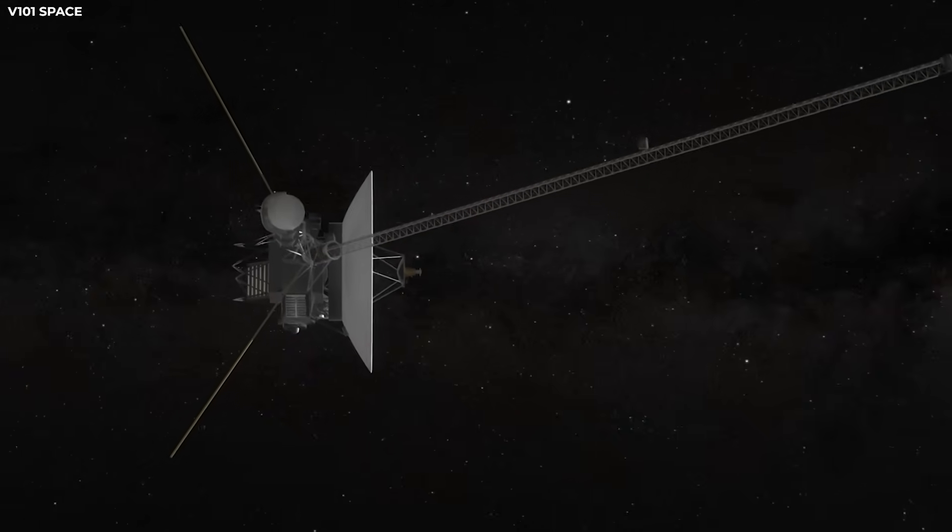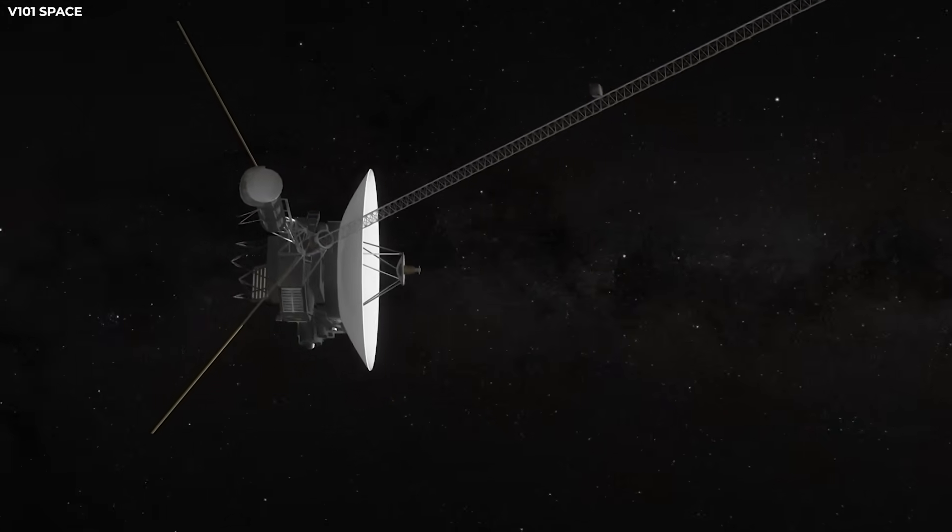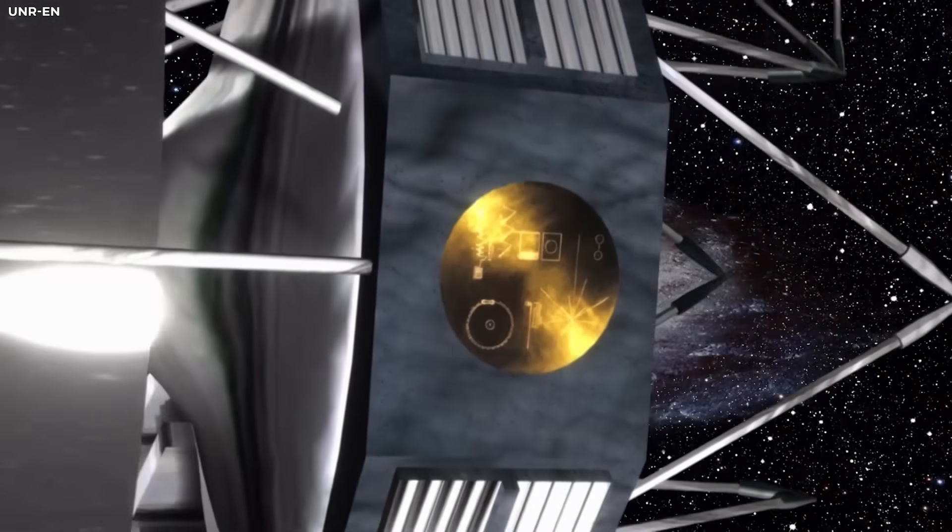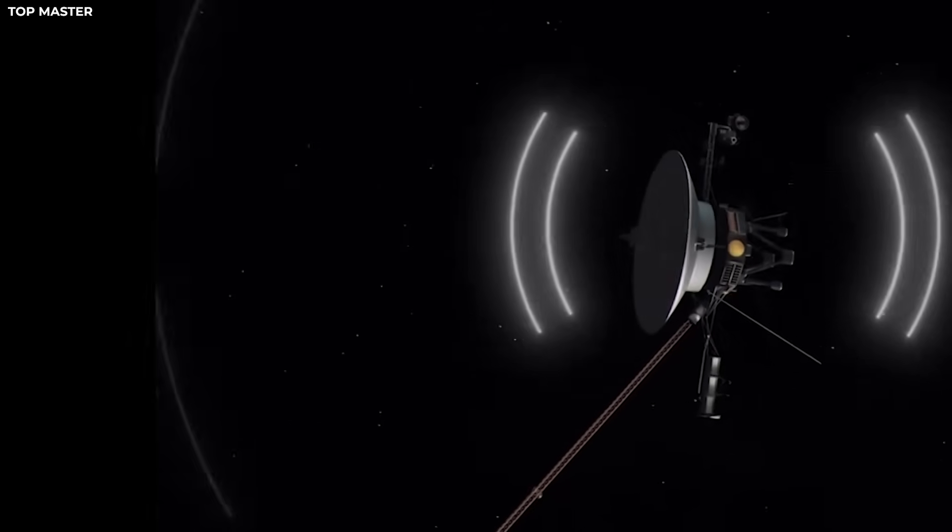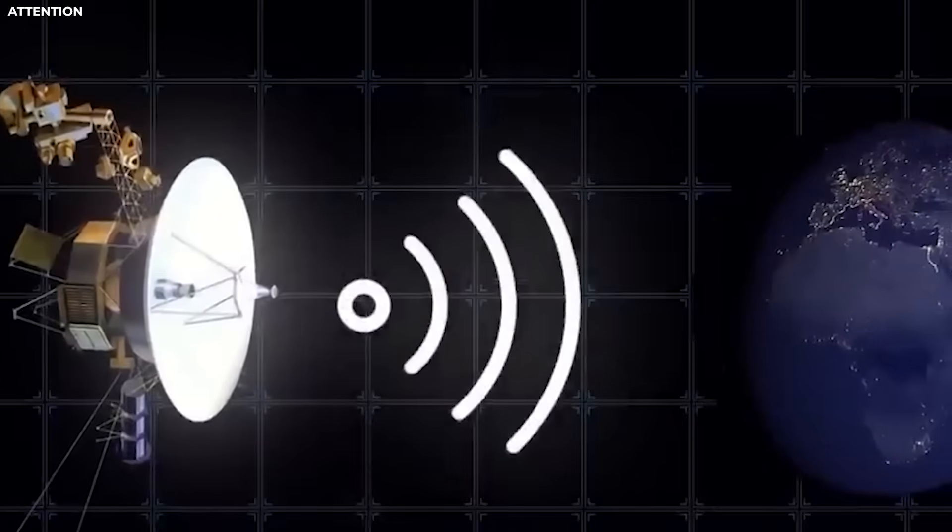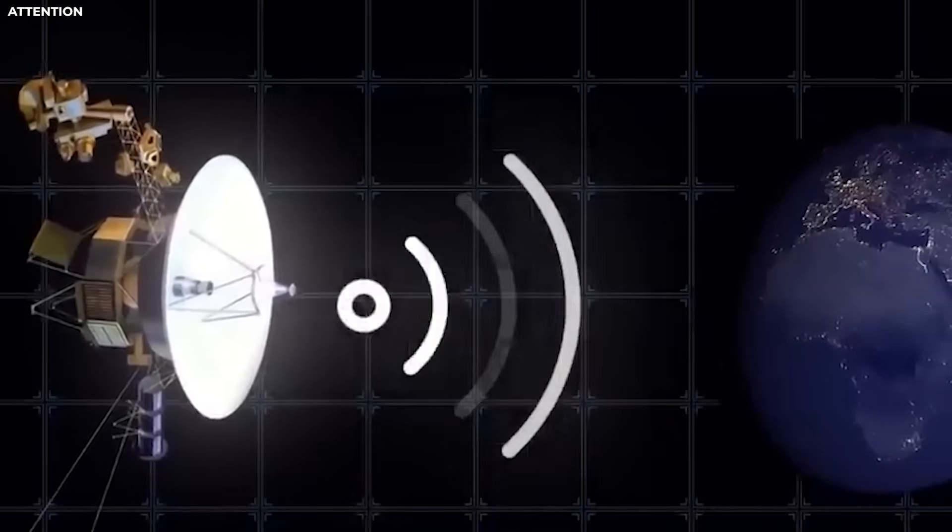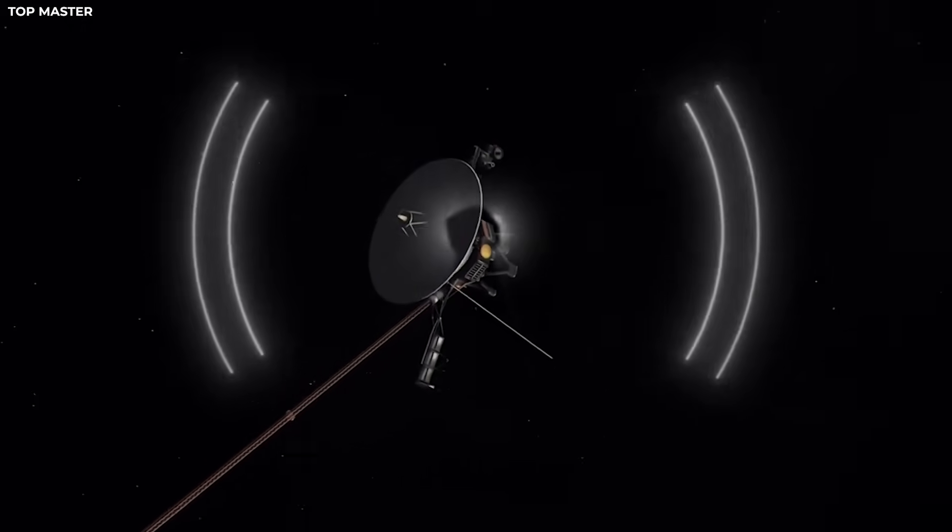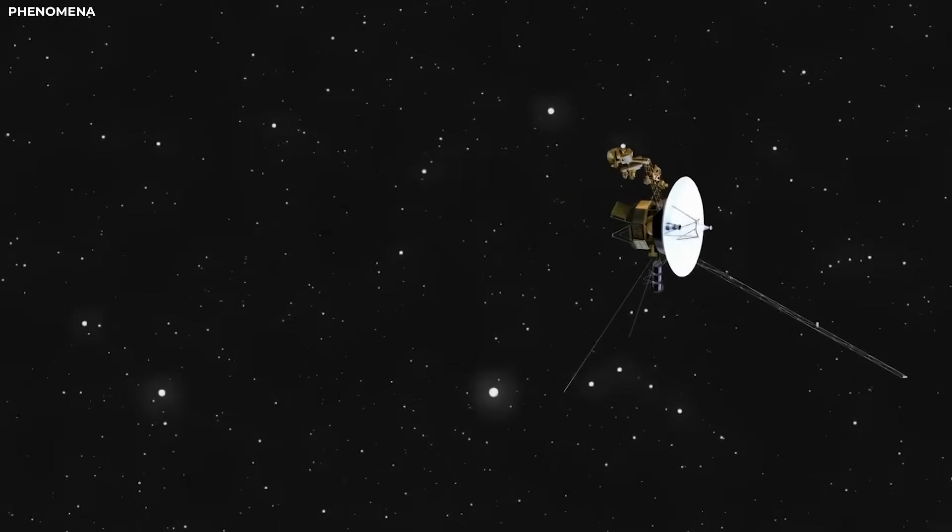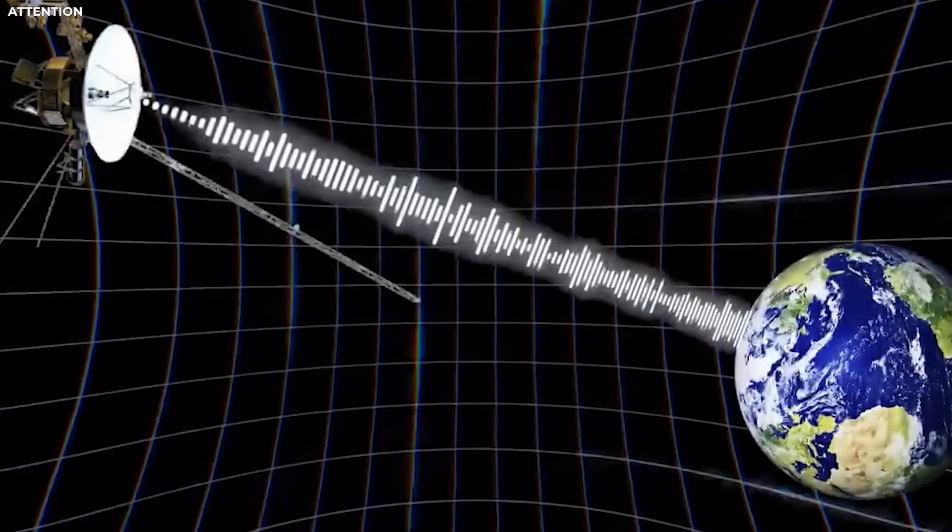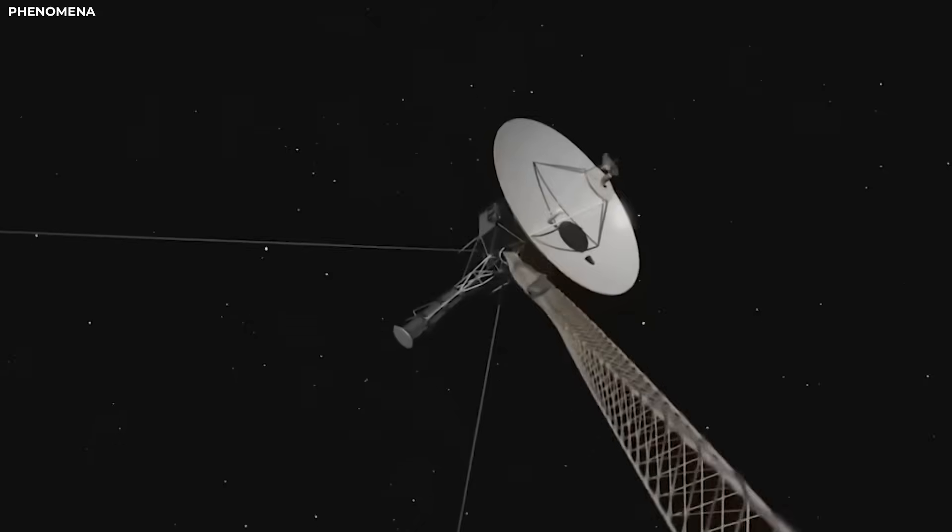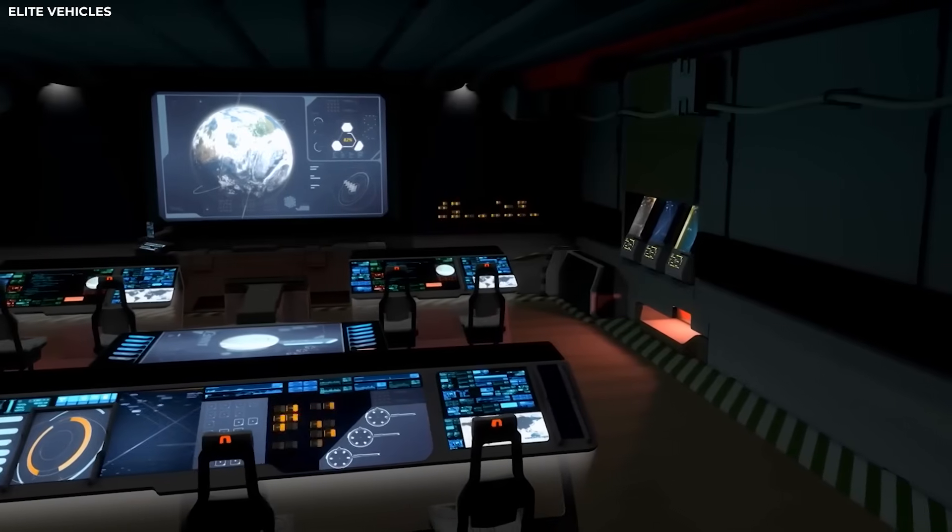Talking through Voyager 2 is not easy. It is very far away. Each message takes around 18 hours to reach it. Then we wait another 18 hours for any reply. That delay makes every move slow and careful. The spacecraft is also very old. It has limited power and only a few tools still working. Engineers are doing their best to keep it running and fine-tune the signal it sends. Some teams looked into small course changes, trying to keep Voyager 2 close to the source of the signal. Others are cleaning up the data, removing extra noise to hear more clearly. Even with all the problems, people are trying.